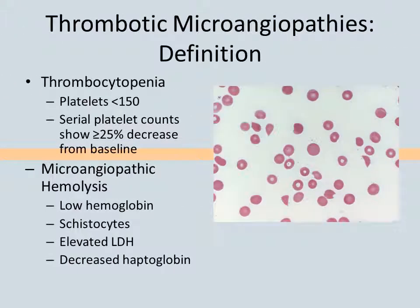TMAs present with low platelet counts and anemia, with evidence of red blood cell destruction. This includes schistocytes — odd-shaped cells damaged by flowing through a mesh of platelets. Lactate dehydrogenase, or LDH, is released from damaged red blood cells, so its levels rise. Haptoglobin, a protein that binds hemoglobin released from red blood cells, will be consumed.